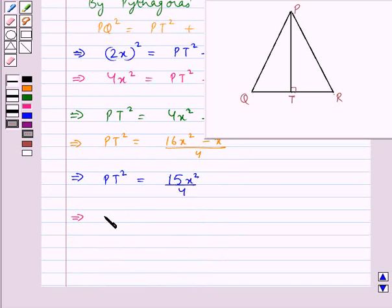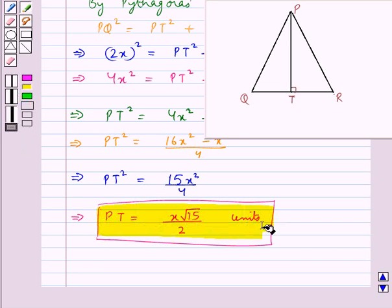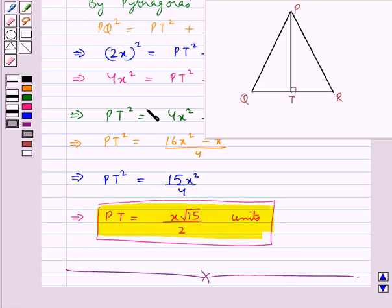So from here we get PT = (x√15)/2 units. We were supposed to find the length of this altitude PT and this comes out to be (√15x)/2 units. So this completes our session. Hope you have understood the solution of this question.